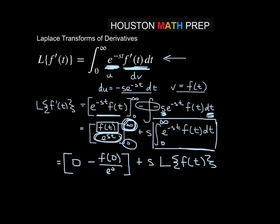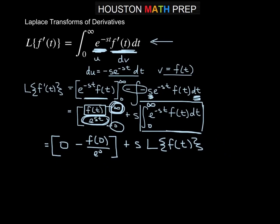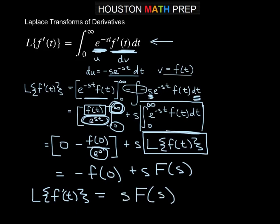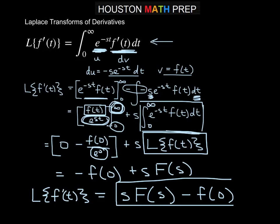Simplifying: e to the 0 is 1, so we get negative f of 0. The Laplace transform of f of t we rewrite as capital F of s, since taking the Laplace transform of a function of t gives a function of s. So the Laplace transform of f prime of t equals s times F of s minus f of 0.